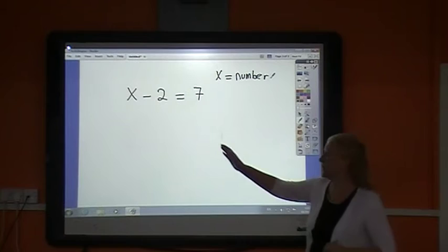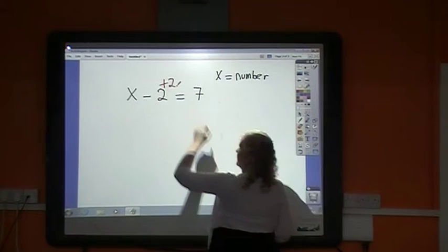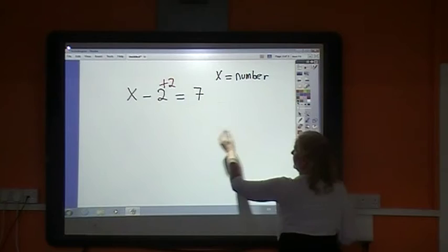So I don't want this minus 2 here. How do I make minus 2 go to 0? I add a 2. So if I add a 2 to this side, I'll get x minus 2 plus 2, which just leaves me x.